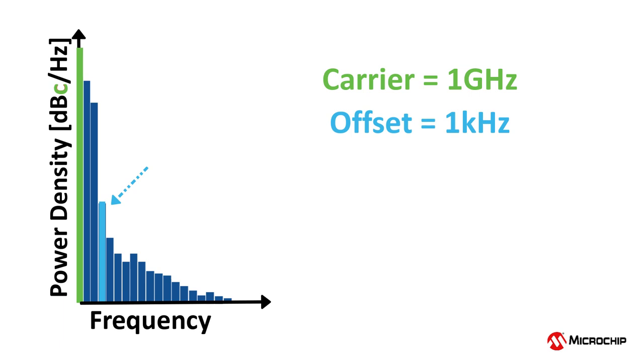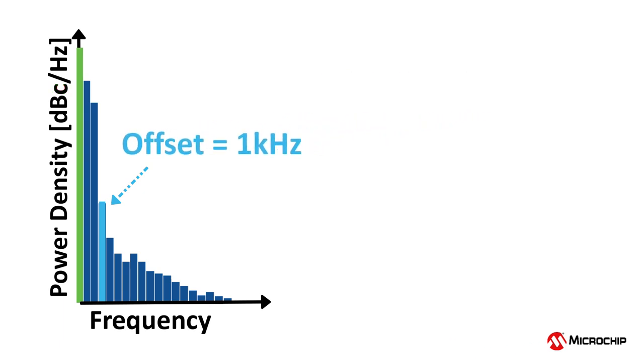In both cases, the phase noise is normalized. It is displayed as its offset from the carrier, irrespective of what the carrier frequency is.